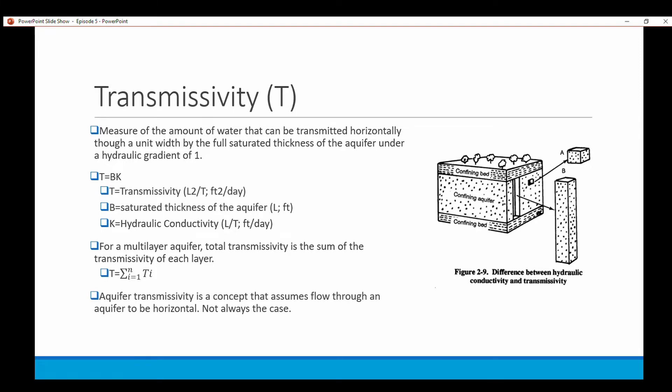Aquifer transmissivity is a concept that assumes flow through an aquifer to be horizontal and that's obviously not always the case. You might have vertical flow in some aquifers.